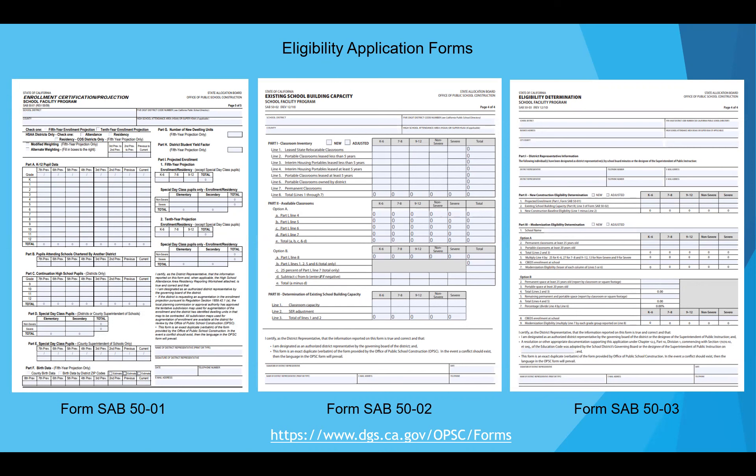OPSC online was designed to replicate the paper applications and to capture data. We are actively working to enhance users' experiences and plan to incorporate help text fields within eligibility applications in the future. Today's presentation is intended to show users what it's like to use OPSC online and will not go over specific instructions tied to modernization and new construction eligibility applications. If you are new to the SFP program, we recommend downloading the forms which include instructions on how to complete modernization and new construction eligibility establishments and adjustments. A link to the form will also be provided on your screen.